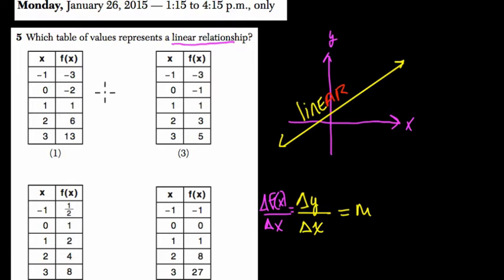So let's look at our first table. Our delta f of x here, going in this step right here, from negative 3 to negative 2, is a change of plus 1. Or we can think of that as negative 2 minus negative 3, positive 1. And our x is also going up. 0 minus negative 1, that's 1. It's going up by 1. So our slope is 1 over 1.